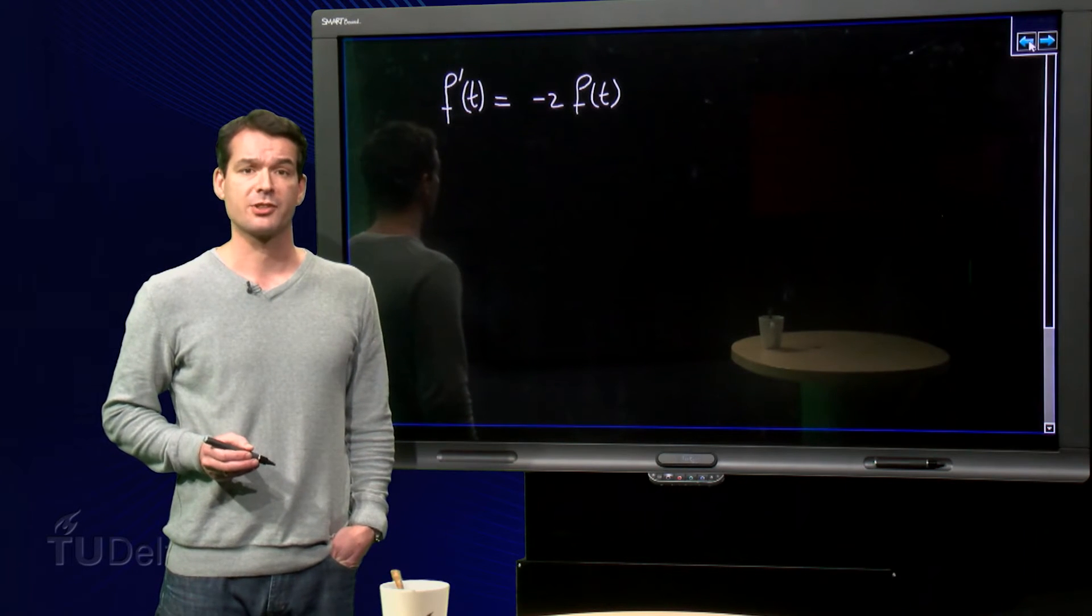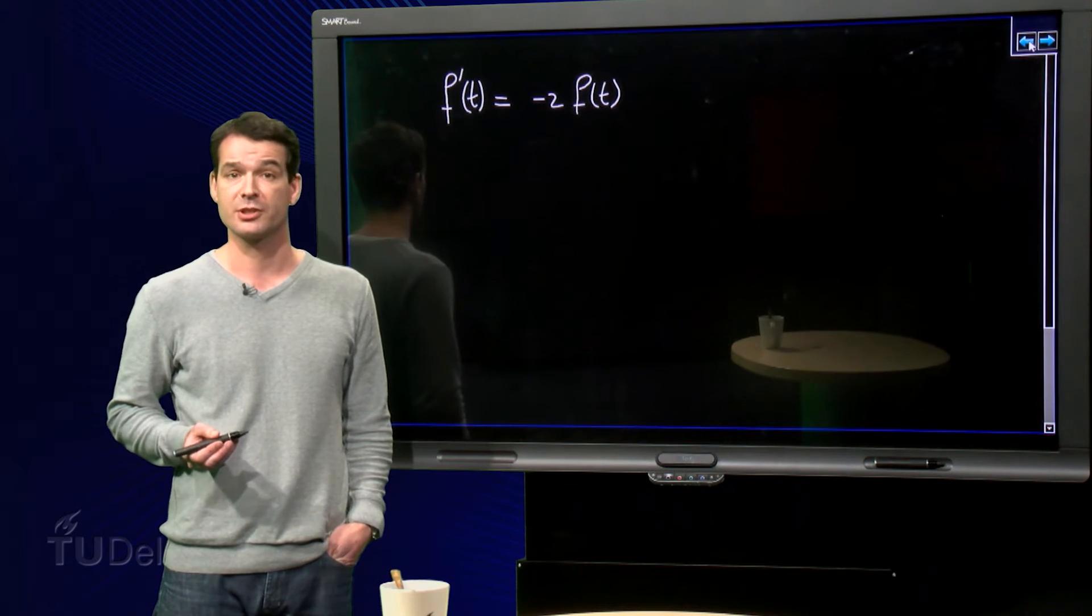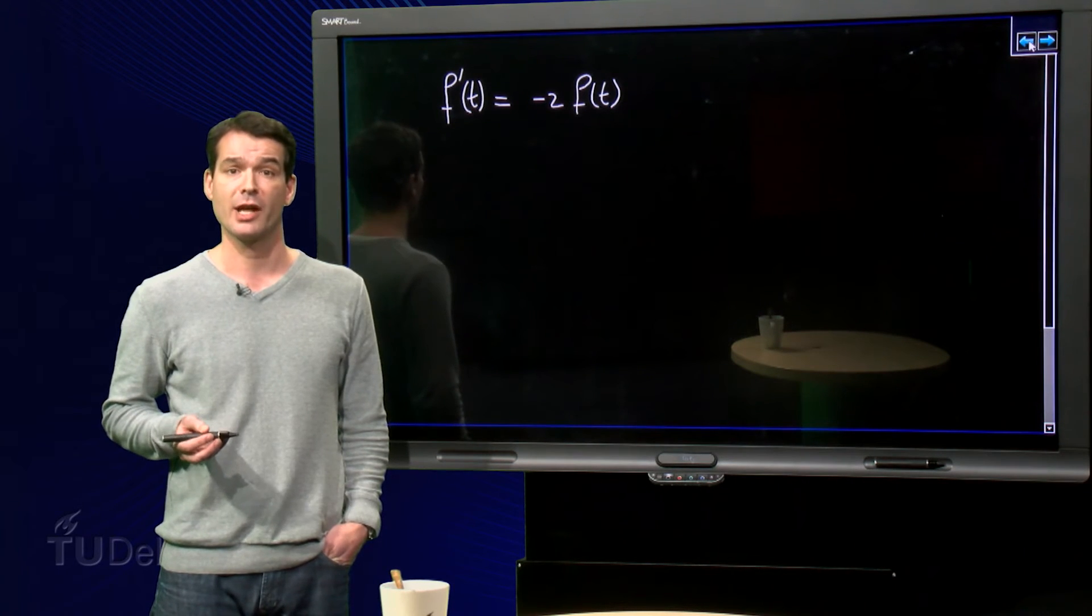We want to find the function f such that the derivative is minus 2 times the function itself. We know such a function, it is an exponential function.